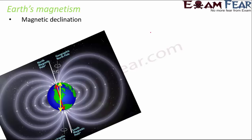When talking about earth's magnetism, three important components are discussed. The first is magnetic declination, also known as angle of declination — the angle between the magnetic meridian and the geographic meridian. We have a geographic north and south pole with the geographic meridian, and similarly a magnetic north and south with the magnetic meridian. The angle between these two meridians is the angle of declination.